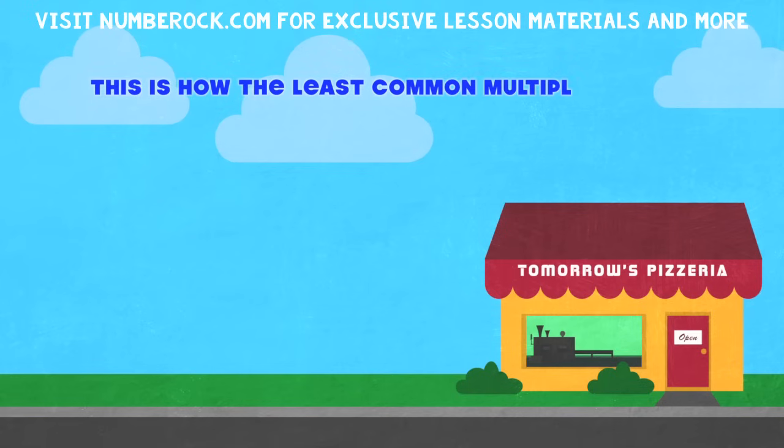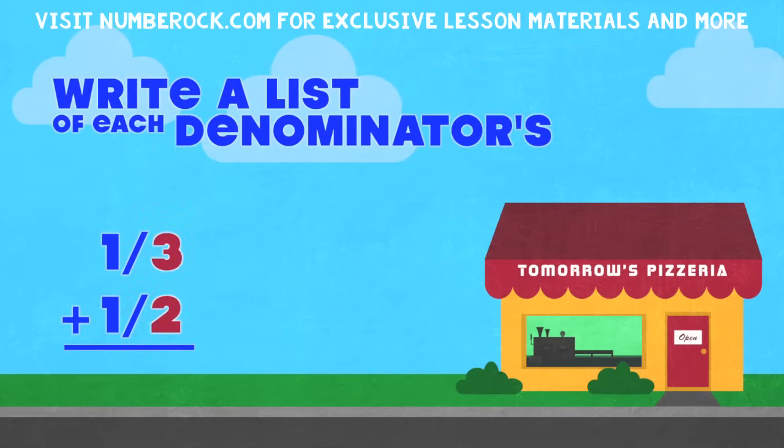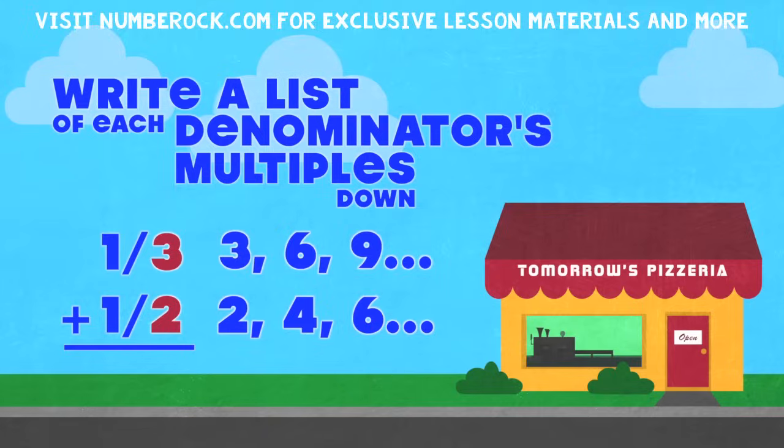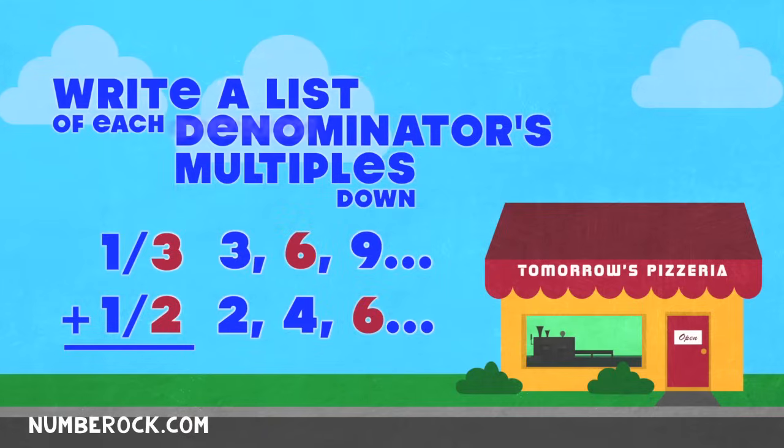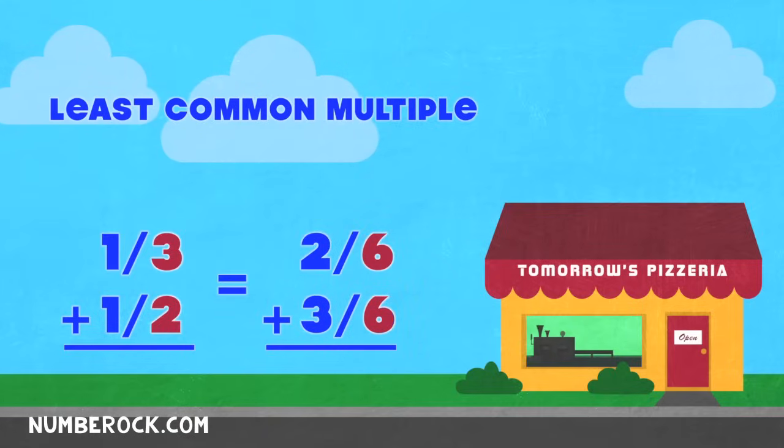This is how the least common multiple's found: write a list of each denominator's multiples down. The smallest number you can find in both of them is the least common multiple, aka the LCM.